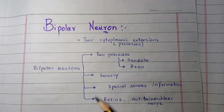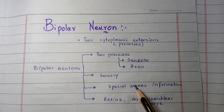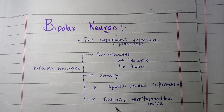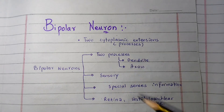Bipolar neurons are always sensory and carry information about the special senses such as vision, olfaction, and hearing. Bipolar neurons are found in the retina and in the ganglia of the vestibular cochlear nerve. This is the structural description of the bipolar neuron.